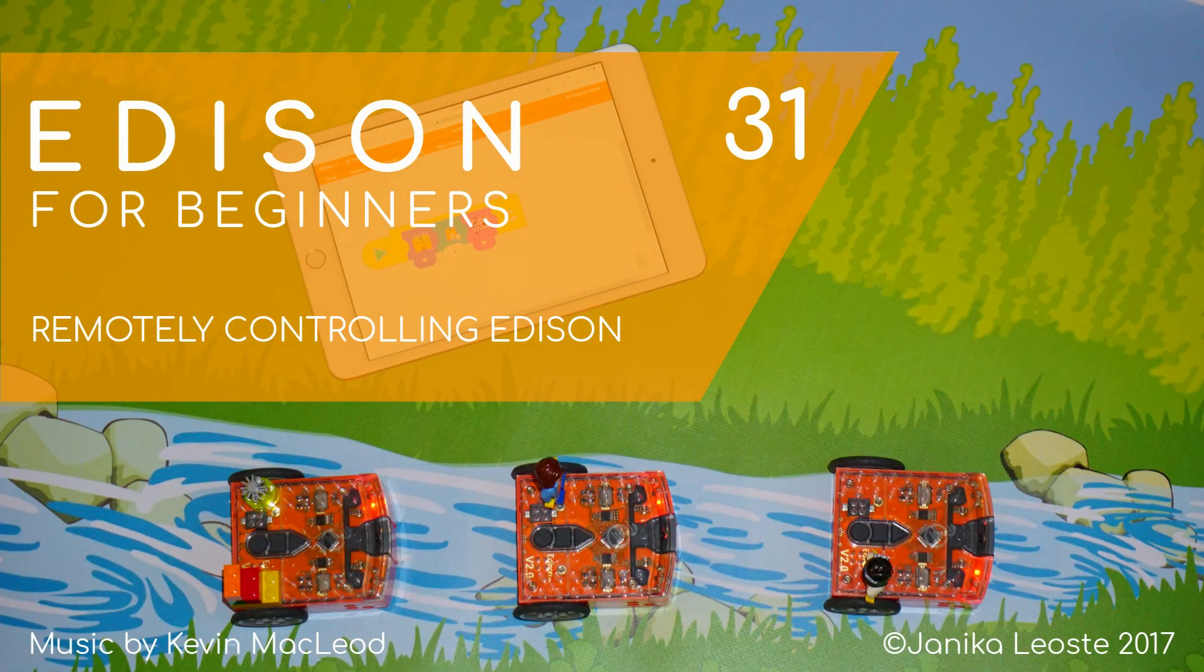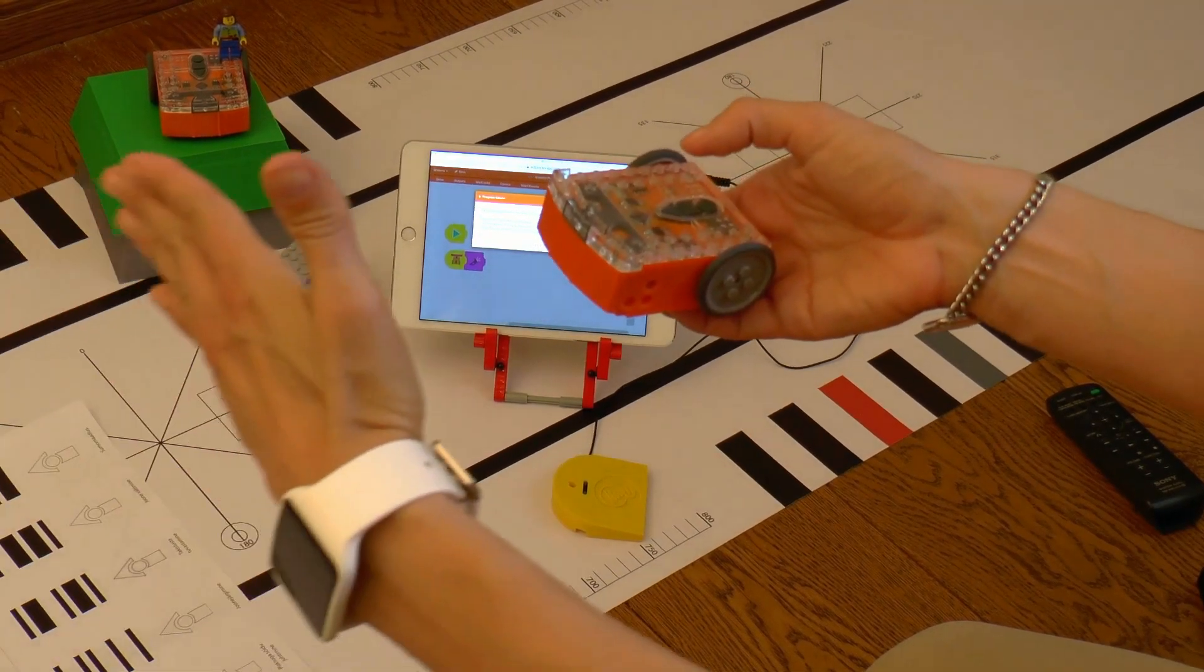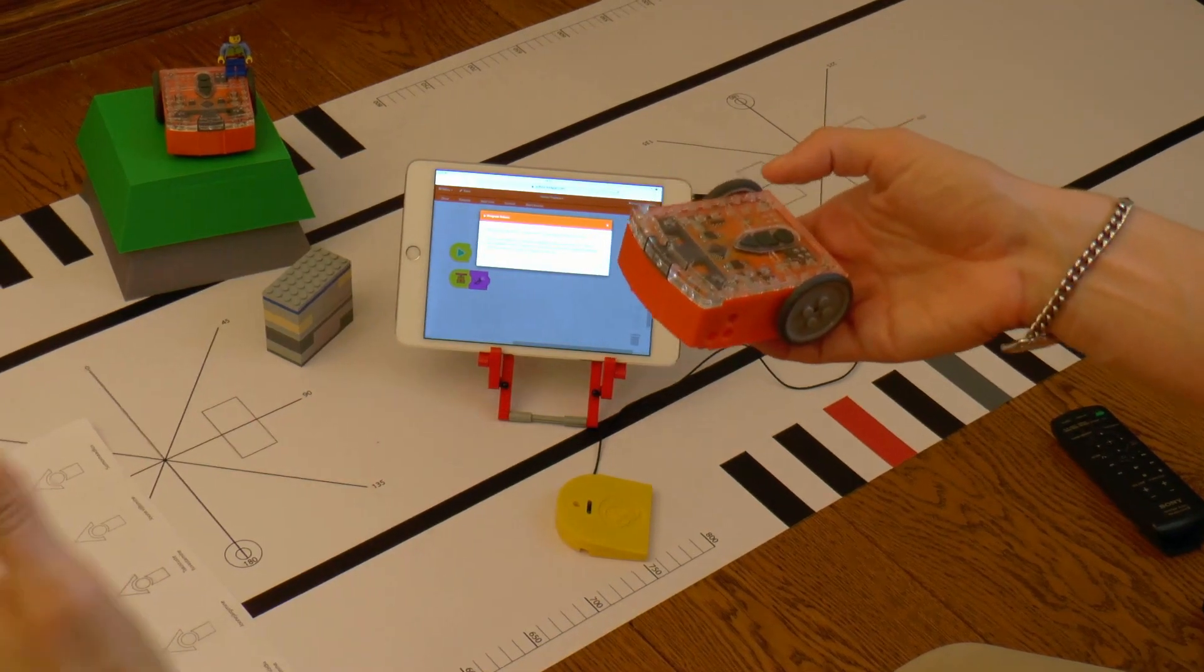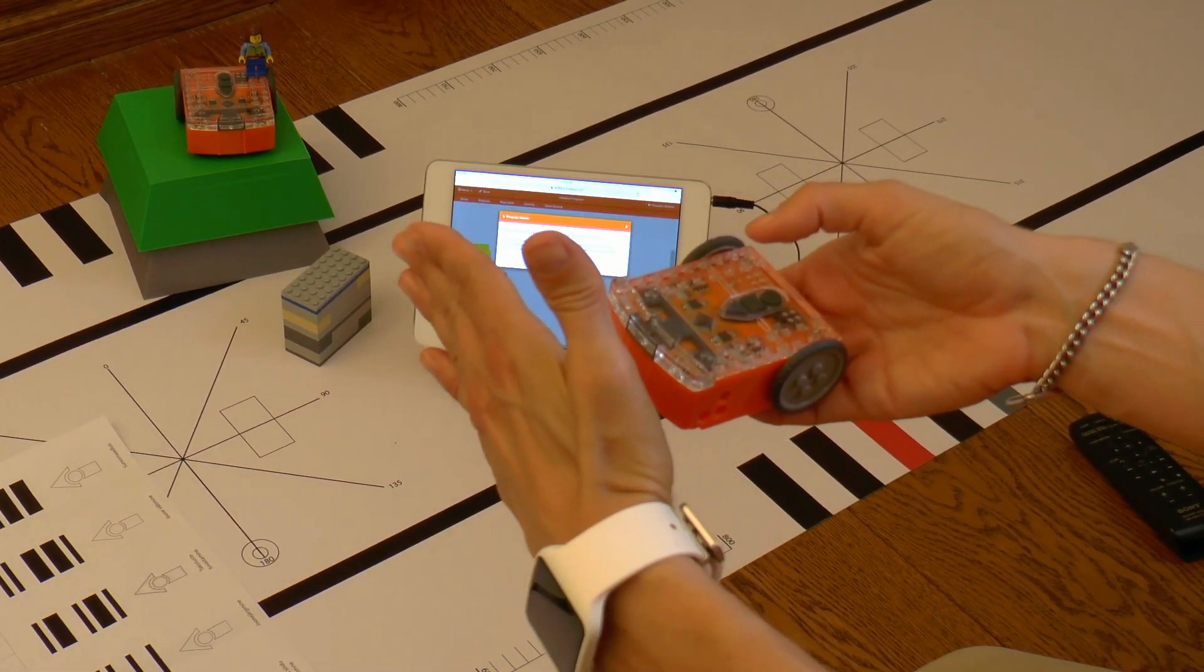Remotely Controlling Edison. In the last video we found out how we can change Edison's obstacle detection sensitivity by calibrating it. In this video we will turn Edison so that it can be controlled with a TV remote like a remote-controlled car.